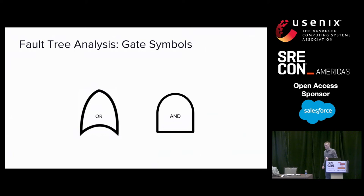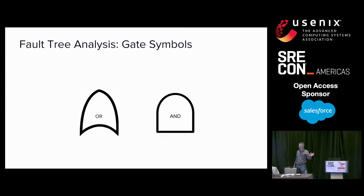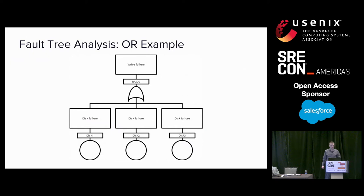The other set of symbols are gate symbols. Gate symbols signify how basic events or intermediate events join up together and how they interact with each other. In this talk, we're going to cover only OR gates and AND gates. As you can imagine, there are gates such as XOR and NORs, but we're going to keep things simple and wind up not using those.